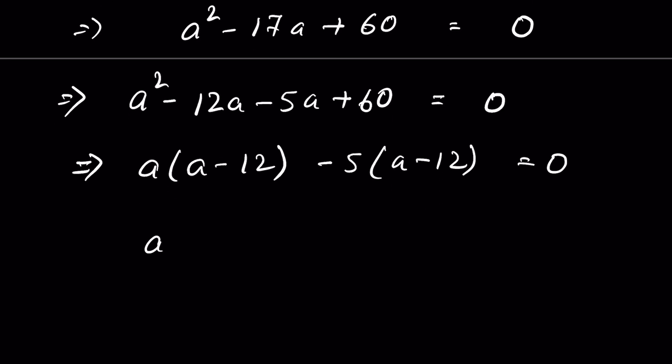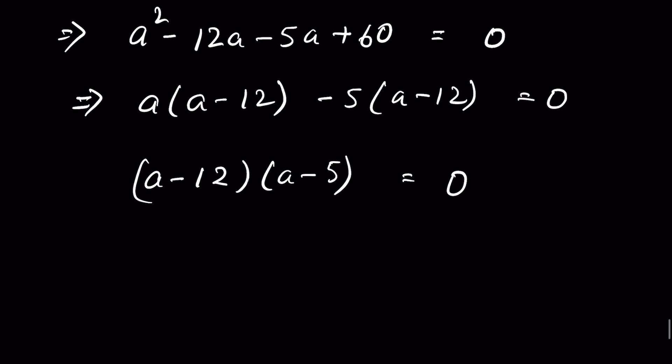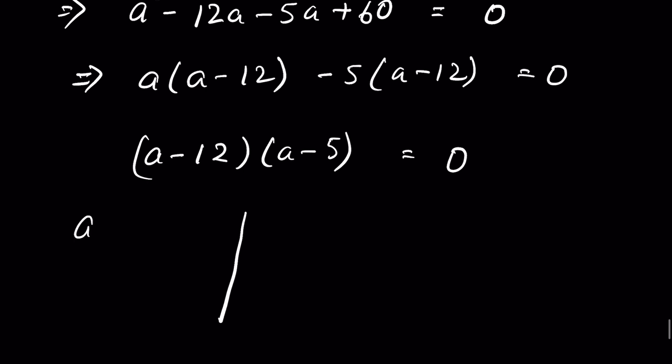(a - 12) is common, so (a - 12)(a - 5) = 0. When a - 12 = 0, then a = 12. When a - 5 = 0, then a = 5.